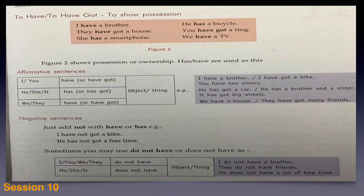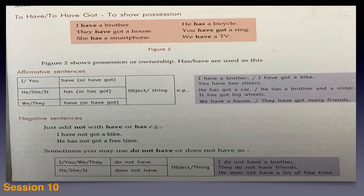In negative sentences, just add 'not' with have or has. For example: I have not got a bike, he has not got free time. Sometimes you may use 'do not have' or 'does not have' — I, you, we, they use 'do not have', and he, she, it use 'does not have'. Examples: I do not have a brother, they do not have friends, he does not have a lot of free time.